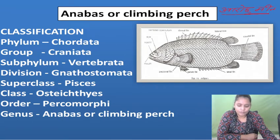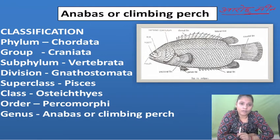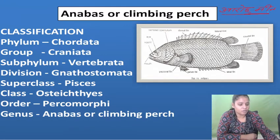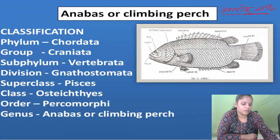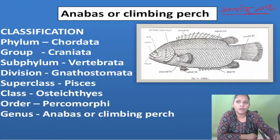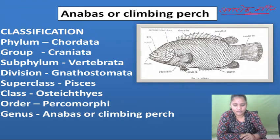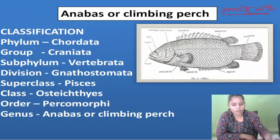Percomorpha — in this order, dorsal and anal fins are found with spiny (resist) structure. The fin rays are also found here. Then coming to genus level, the genus is Anabas and the common name is climbing perch.